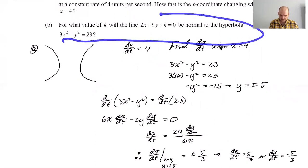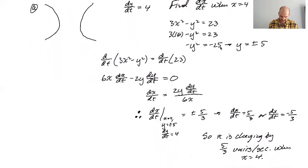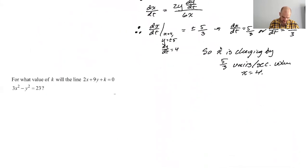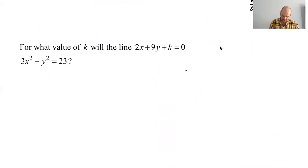So I think either of those is okay. How fast is it changing? I think you can just say it's changing five thirds units per second. I think that's a good answer. So x is changing by five thirds units per second when x equals 4. Sometimes it's positive, sometimes it's negative, but it's definitely changing by that. So let's look at b. For what value of k will the line 2x plus 9y plus k equals zero be normal to the hyperbola? It's almost like an entirely different problem.